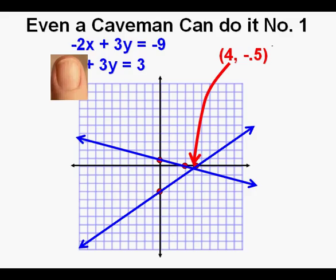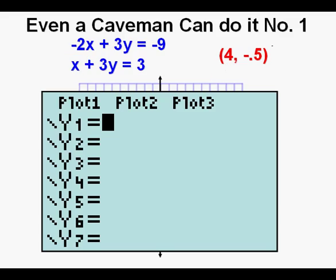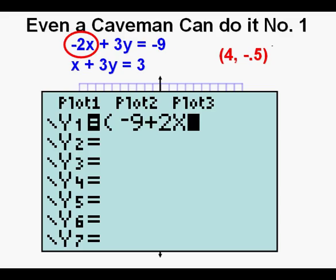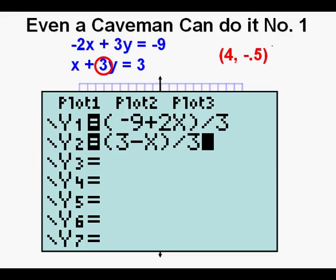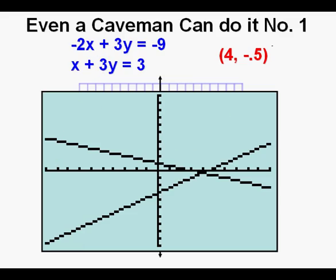He asks us to check it in the calculator by graphing. We first go to the Y= view and enter the first equation by opening parentheses, entering negative 9, then adding 2x to get rid of the negative 2x on the left. We complete solving for y by closing parentheses and dividing by the coefficient of y, which is 3. Next we scroll down to Y2, open parentheses, enter 3, then subtract x to get rid of the x on the left. We solve for y by closing parentheses and dividing by the coefficient of y, which is 3.